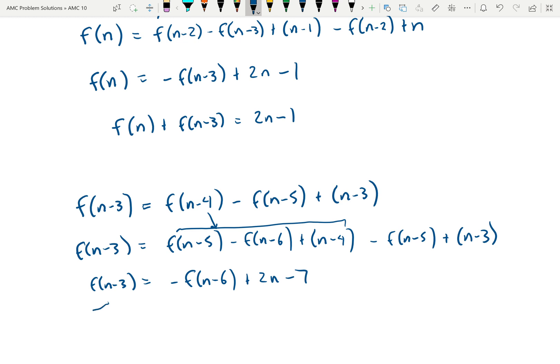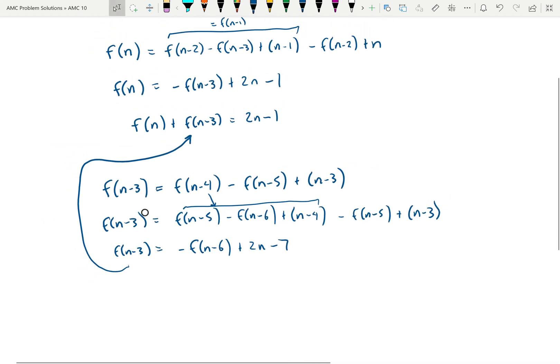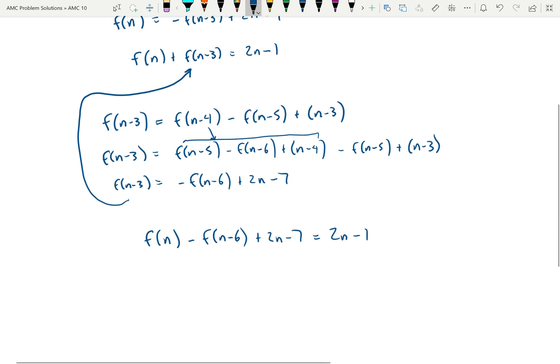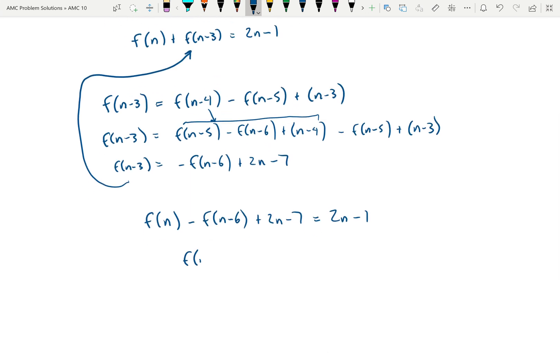So if we take that value and plug it up there, notice the 2n is going to be helpful for us. We get that f(n) - f(n-6) + 2n - 7 is equal to 2n - 1. And rearranging again, we get f(n) - f(n-6) is equal to 6.